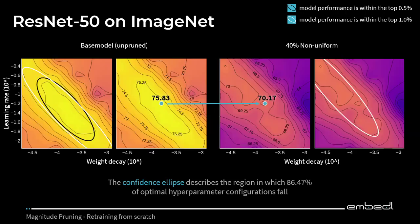We also looked at ImageNet. With ImageNet, we only looked at 40% non-uniform pruning, which is quite intermediate pruning. And here once again, it confirms our initial results: the initial hyperparameters of the base model perform really well on the pruned model as well.